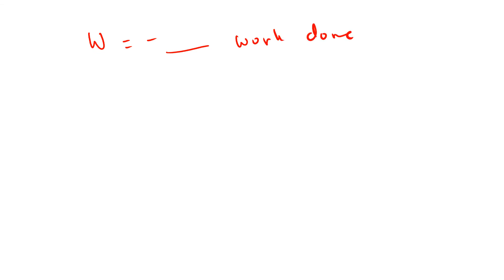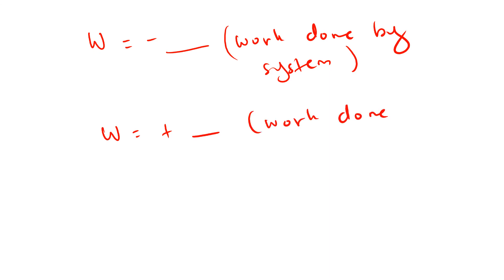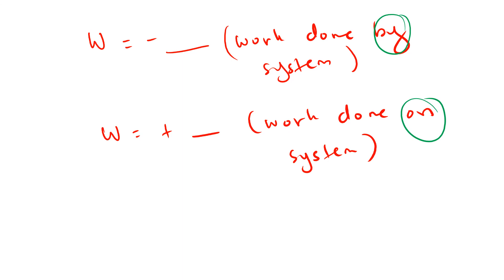One important clarification: when work is negative, it means work done BY the system. When work is positive, it means work done ON the system. A helpful way to remember: positive is like 'on me' — you're treating someone, so energy goes out from you to them. Negative work means the system is doing the work outward. So be careful with the words 'by' and 'on' — the sign does not represent direction, only whether it's done on or by the system.